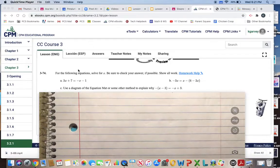3-74C. Use a diagram of the equation mat or some other method to explain why negative times x minus 3 in parentheses is equal to negative x plus 3.